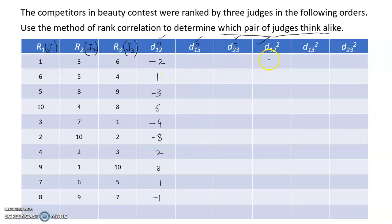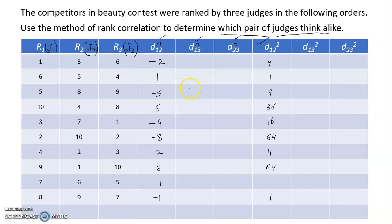Squaring those d12 values: (−2)²=4, 1²=1, (−3)²=9, 6²=36, (−4)²=16, (−8)²=64, 2²=4, 8²=64, 1²=1, (−1)²=1. Now moving to d13, the difference of ranks between the first and third judge.